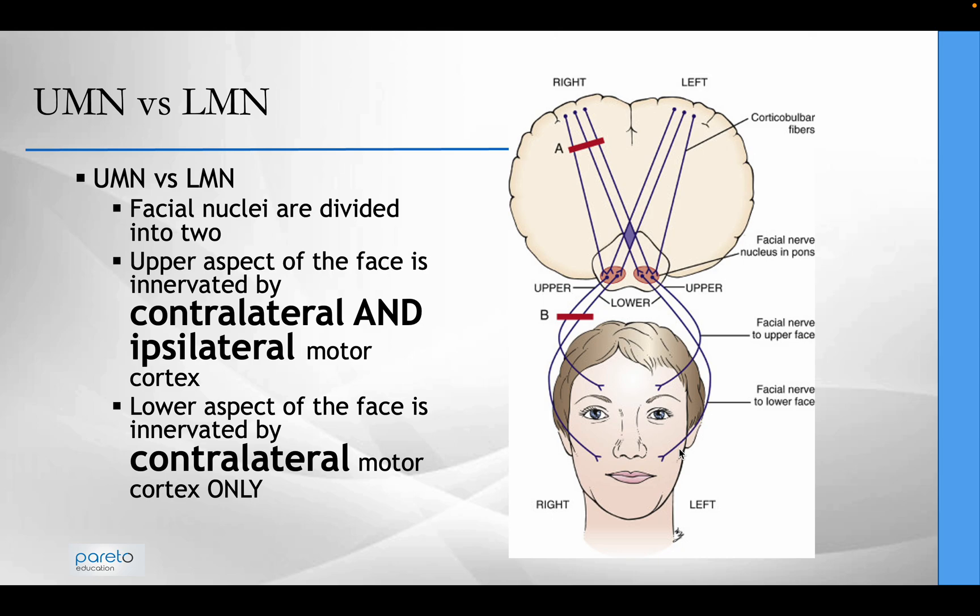The facial nuclei is divided into two. The upper aspect of the face is innervated by the contralateral and ipsilateral motor cortex, whilst the lower aspect of the face is innervated by the contralateral motor cortex only.